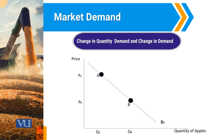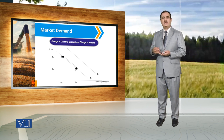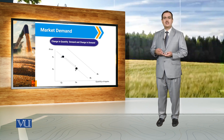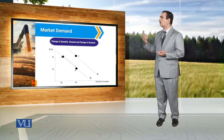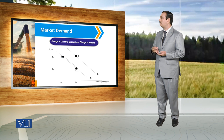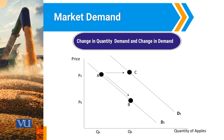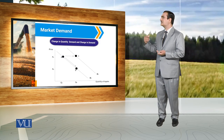The movement along the demand curve from point A to point B is called an increase in quantity demand of apples. But it might be possible there is a change in factors other than price. Because of that change in factors other than price, the demand curve will shift from one position to another position. This movement from D1 to D2 is because of factors other than price. In this particular case, if price remains constant at PA, the consumer is willing to have QB quantity of apples, denoted by point C on the D2 curve. It indicates an increase in demand. So the movement from point A to B is called change in quantity demand, while the movement from point A to point C is called change in demand.